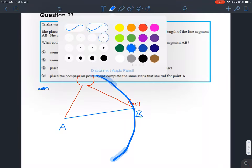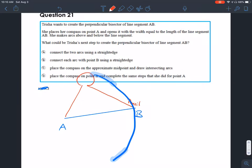What would she do next? That's what this question is asking. In order to make a perpendicular bisector, most of the time when you're making constructions, you're always doing everything twice.